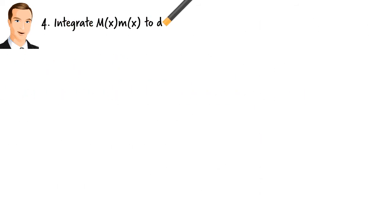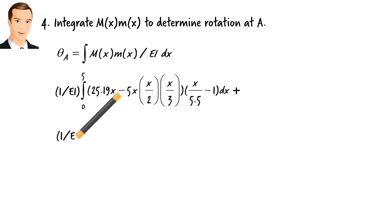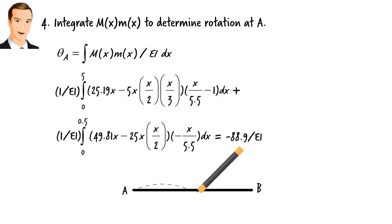The slope at A equals the integral of the product of the two moment expressions divided by EI. This gives us a slope of negative 88.9 over EI.